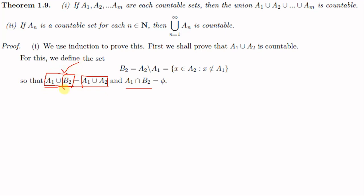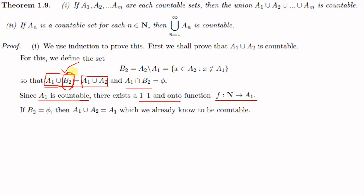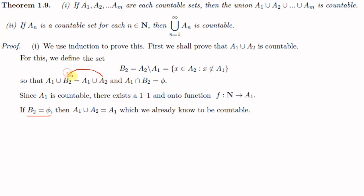We consider three cases: B2 is empty, B2 is finite, or B2 is infinite. Since A1 is countable, there exists a function f from ℕ to A1 which is one-to-one and onto. In the first case, when B2 = ∅, we get A1 ∪ A2 = A1 ∪ ∅ = A1, which is countable. So A1 ∪ A2 is countable when B2 is empty.